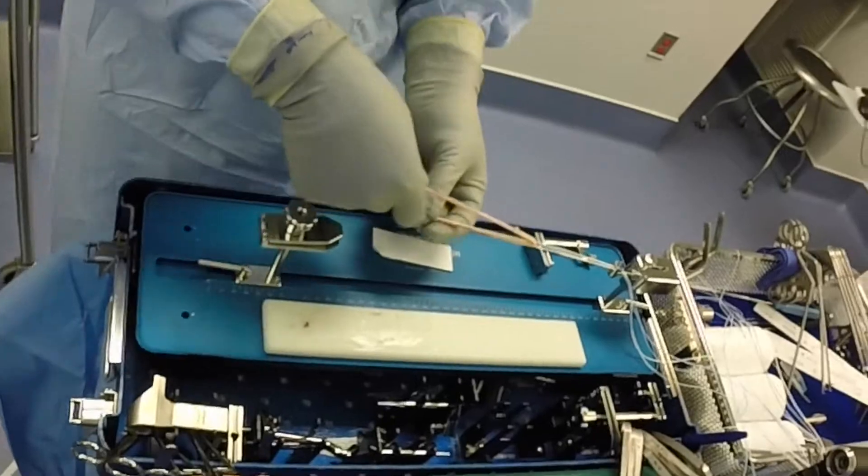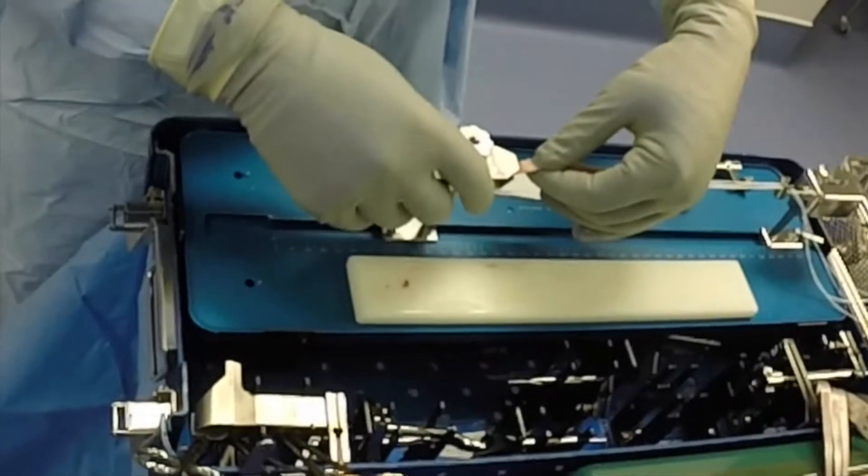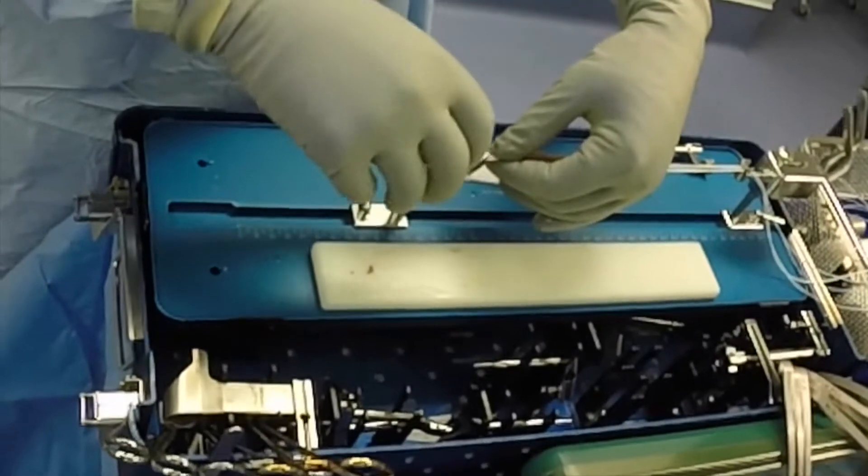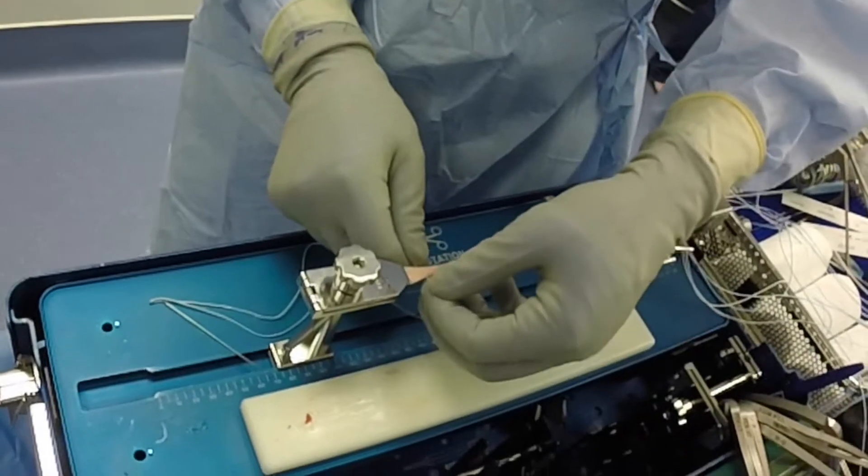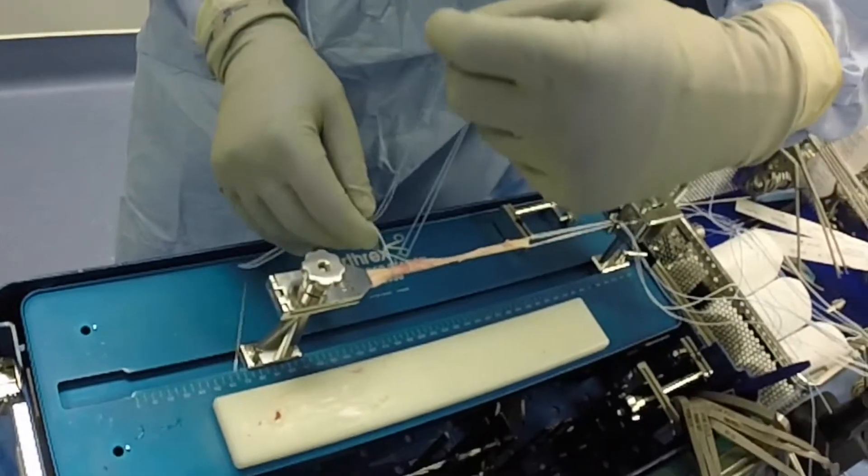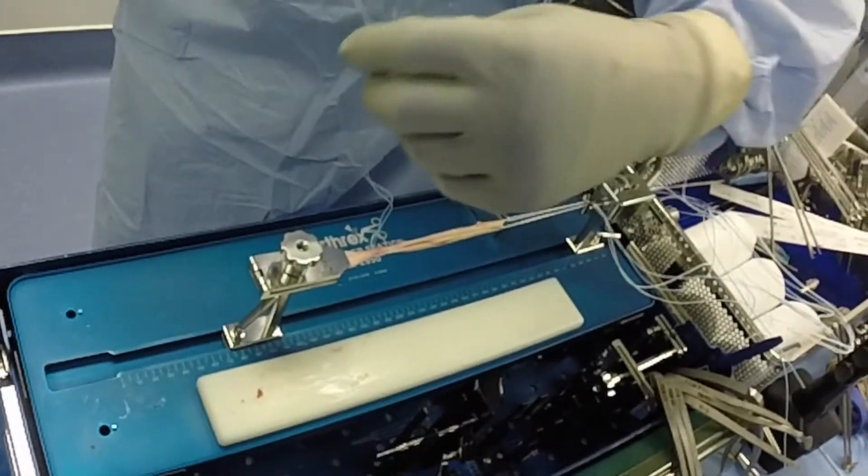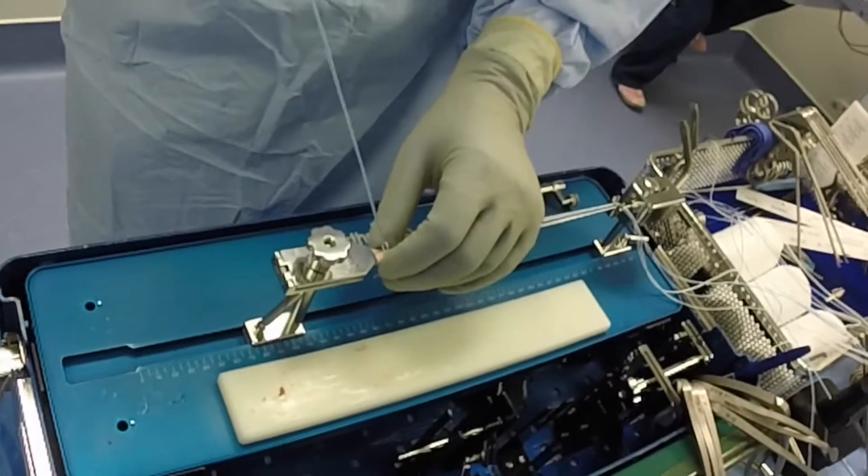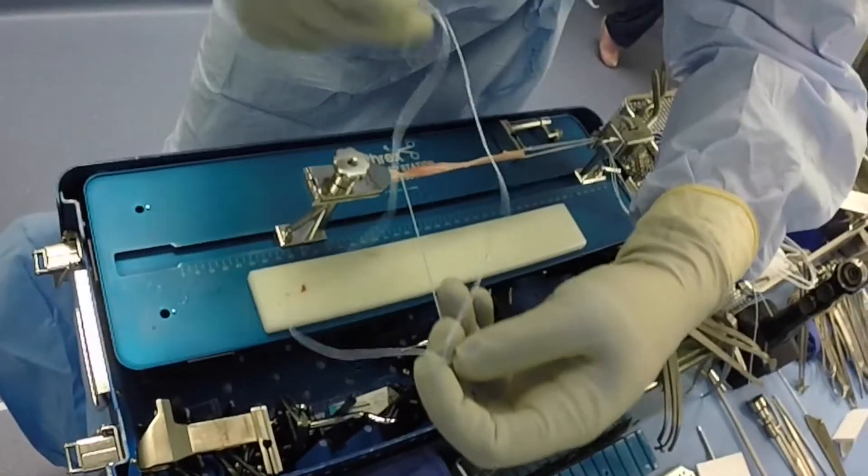The graft is then doubled over through the tibial side TightRope and secured to the graft station. A fiber loop suture is then passed around the doubled-over tendon on the side away from the TightRope and cinched in place.